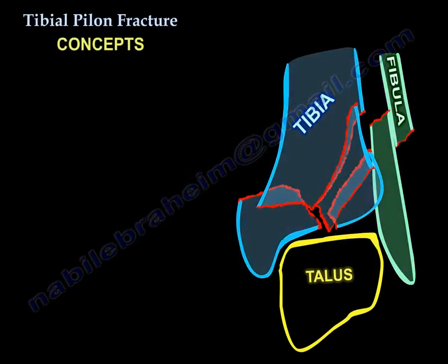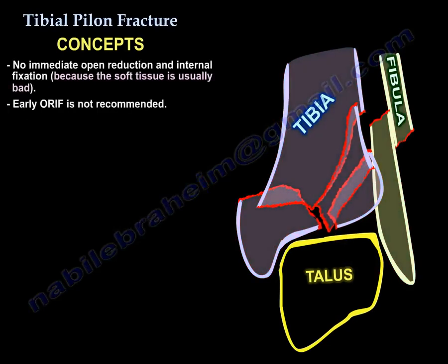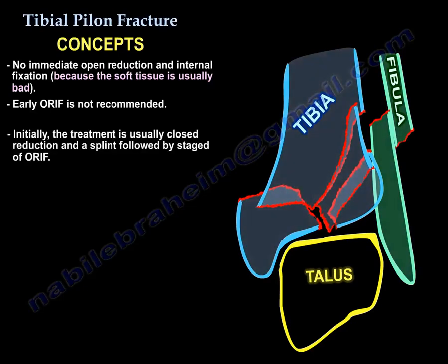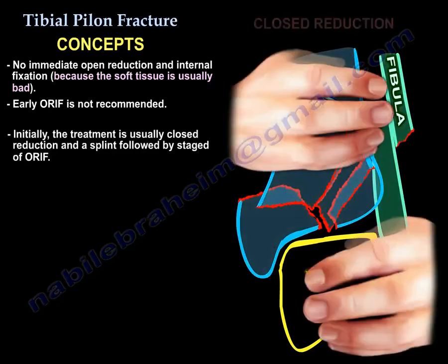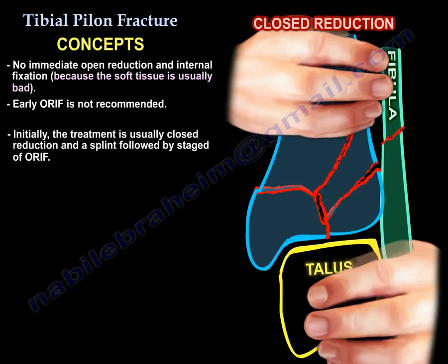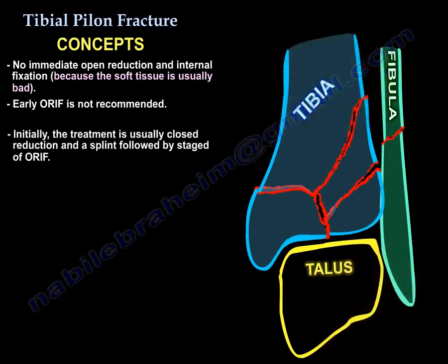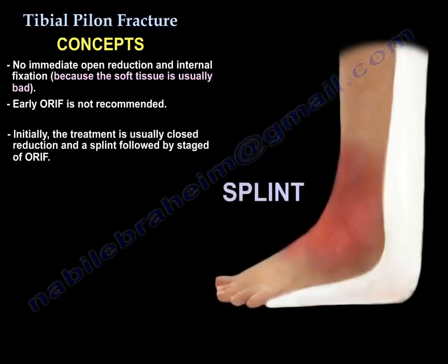Key concepts of pylon fracture: there should be no immediate open reduction and internal fixation because the soft tissue is in poor condition. Early ORIF is not recommended initially. The treatment is usually close reduction and splint, followed by staged open reduction and internal fixation.